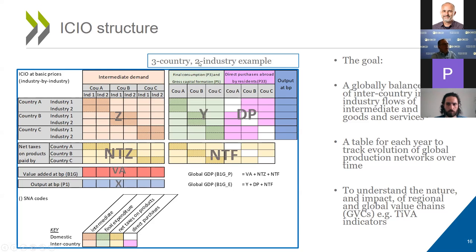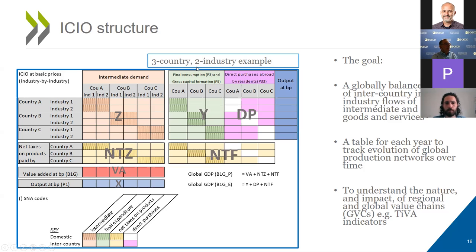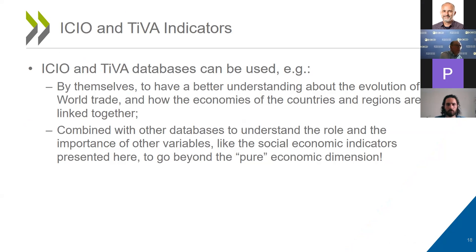That's the overall structure for three countries and two industries, for example. We have the intermediate consumption, and we also have the tax on products paid by different countries. So going from purchasers' price to basic price, we know how much tax the imports from country A pay to country B and country C. We have this matrix of taxes on goods flowing from one country to another. This is the structure of the inter-country input-output table.